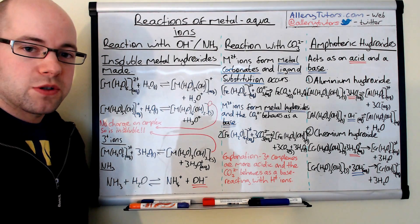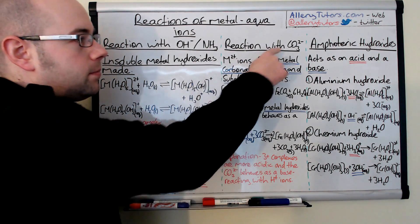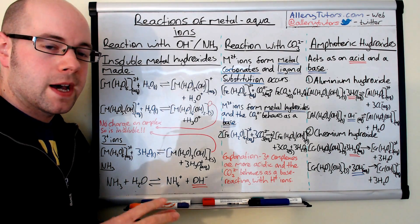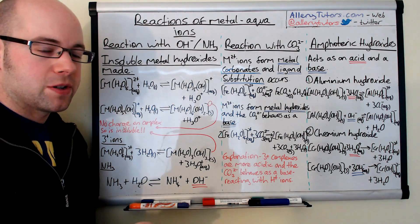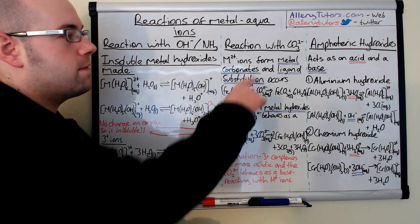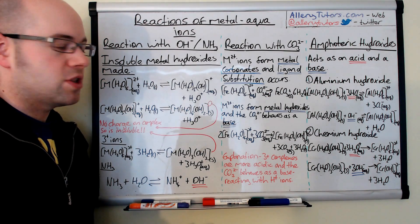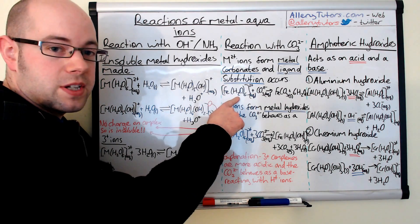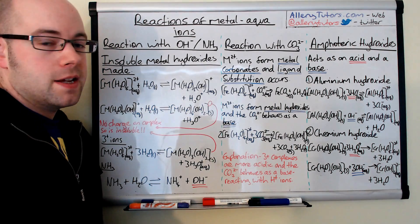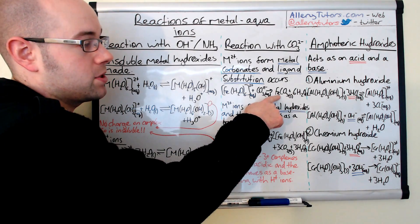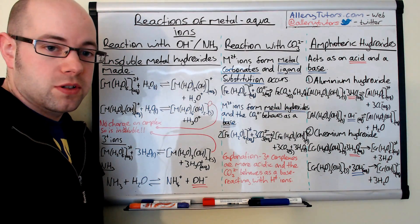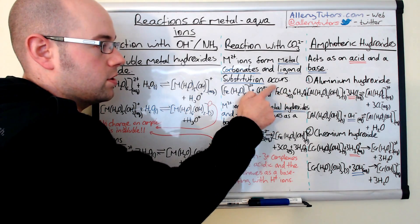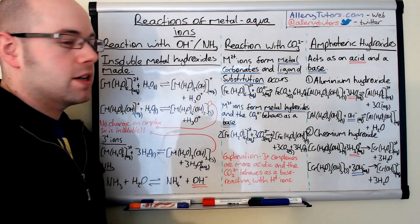Now we move on to reactions with carbonates. Carbonates have the formula CO3 2−. This is really important because we get two different products depending on whether our transition metal ion has a 2+ or 3+ charge. For M2+ ions, metal carbonates form and ligand substitution occurs. For example, the iron hexa aqua 2+ complex reacts with carbonate to form iron carbonate solid and six water molecules. The carbonate is a solid because it has no charge, so you see a precipitate of iron carbonate.